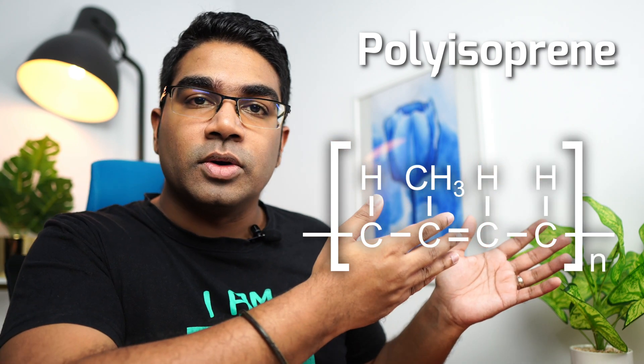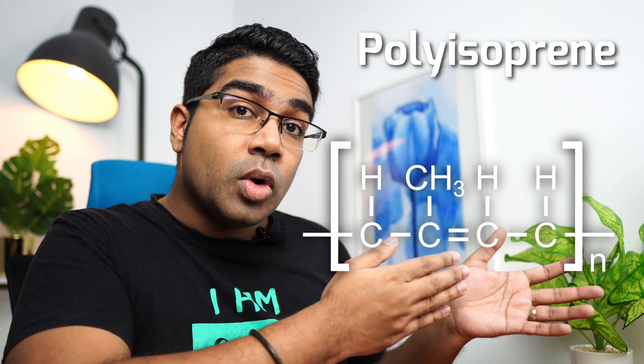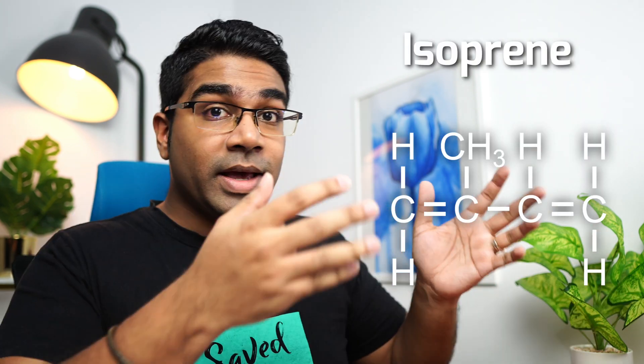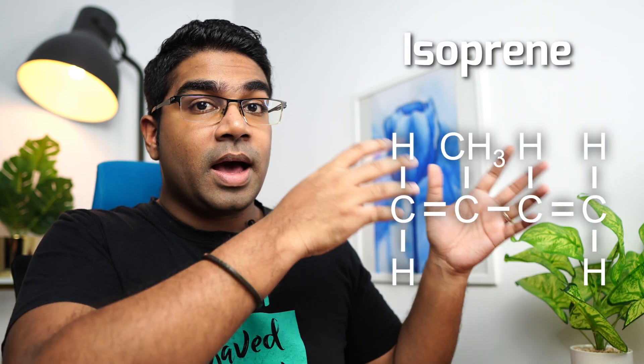Rubber polymers are known as polyisoprene. This is what polyisoprene looks like, and the monomer for polyisoprene is of course isoprene. As you can see, isoprene consists of two carbon-carbon double bonds, which enables it to undergo addition polymerization to become a long chain of polyisoprene.